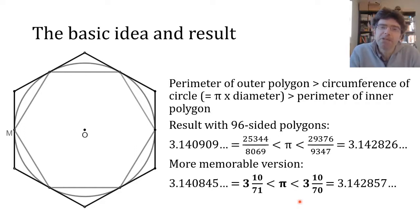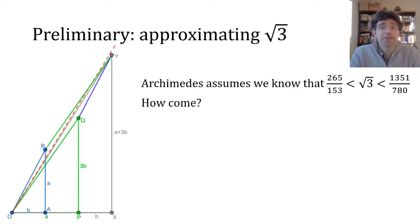So Archimedes worked with rational approximations throughout, and actually the whole process is based on the fact that root 3 lies between 265/153 and 1351/780. So we're going to look at that result first. Archimedes doesn't explain how he got these approximations, but they are both terms in a series which has a reasonably simple geometrical background to it.